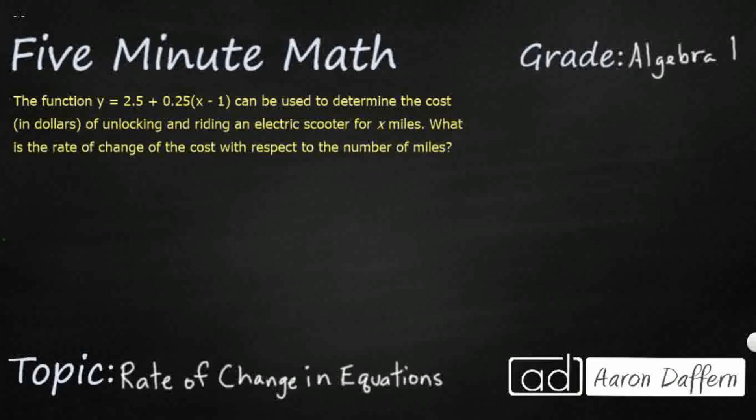So we have a word problem here, and it gives us a function right here. This y equals 2.5 plus 0.25, and then multiplied by x minus 1. So that is used to determine the cost in dollars of unlocking and riding an electric scooter.